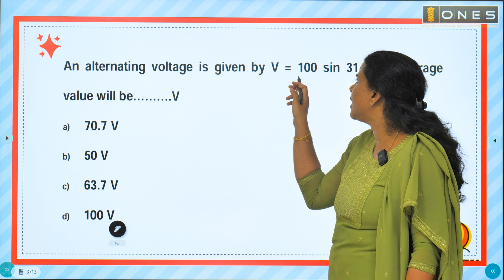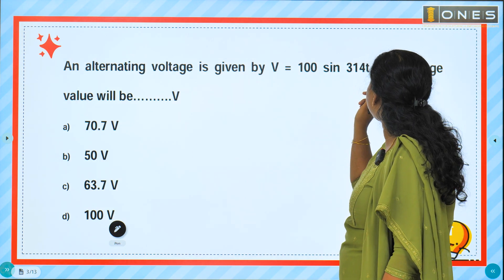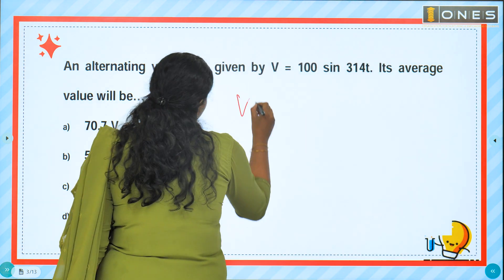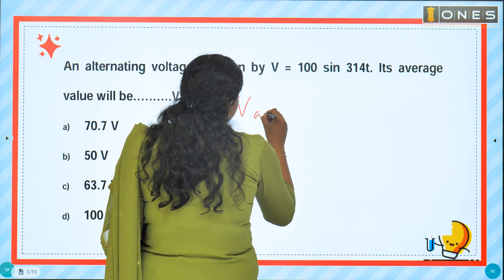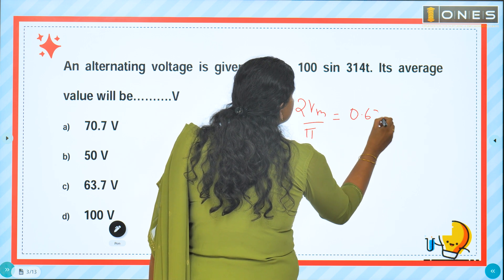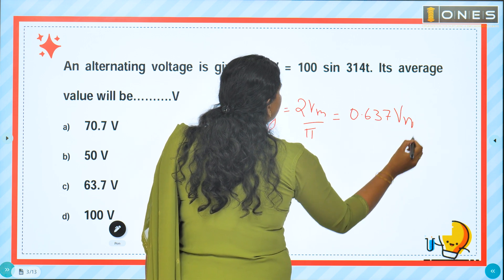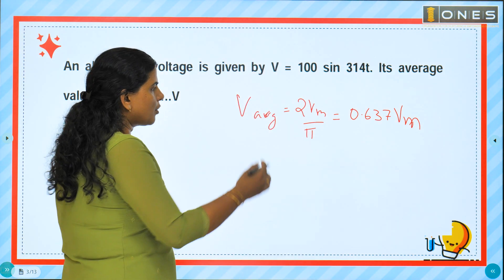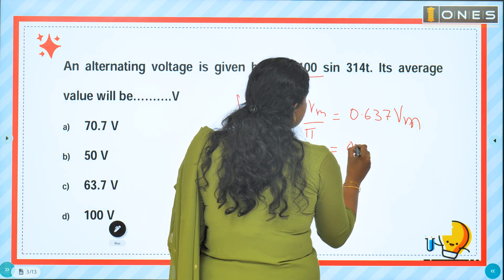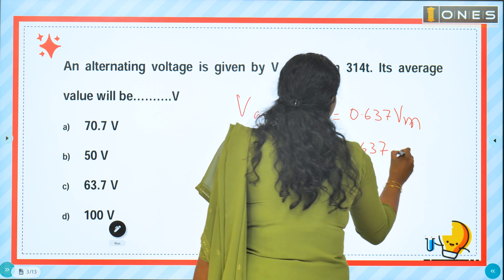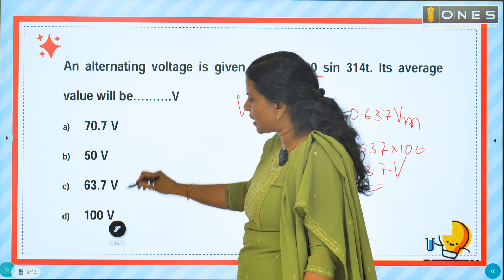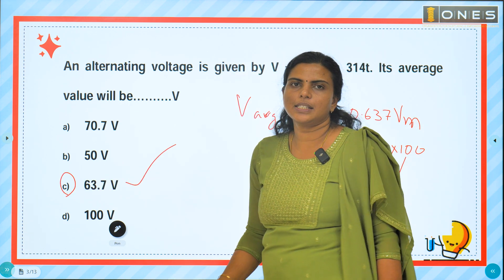An alternating voltage is given by V = 100 sin(3πT). Its average value will be? For AC sine wave, the average value V_avg equals 2Vm/π, which is 0.637 × Vm. With Vm = 100 volt, the answer is 0.637 × 100 = 63.7 volt. Option C is the right answer.